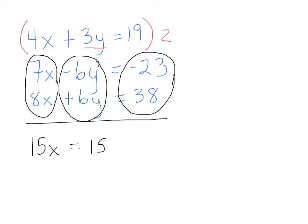And so now solving for x is very simple. Divide 15 on both sides. And so I have x equals 1. And so now that I know that x equals 1, I can take that 1, and I can plug it in for x. Any of the three x's will give you the same output.